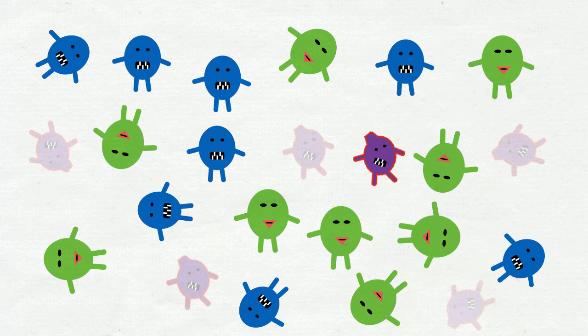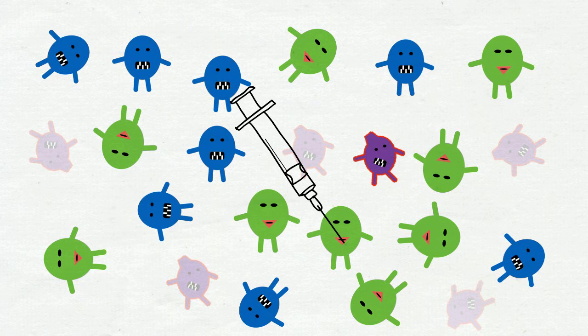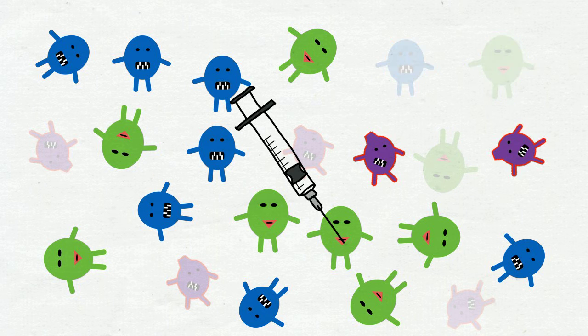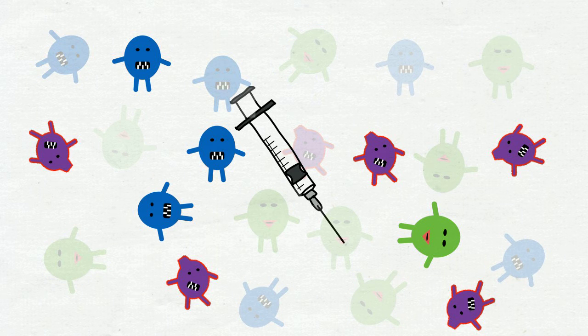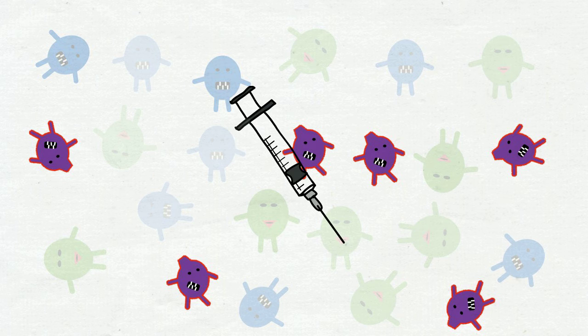But let's turn the tables and change the odds of survival. One sure way to do that is to introduce an antibiotic. Now it is the antibiotic resistant bacteria which have a distinct advantage. Only they survive, whilst all the other bacteria are killed off. Not only do they survive, but they thrive, all of their competitors having been removed.